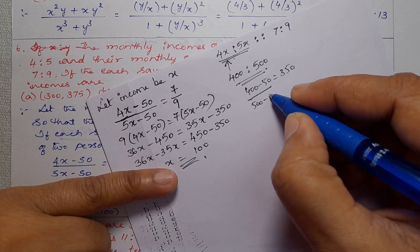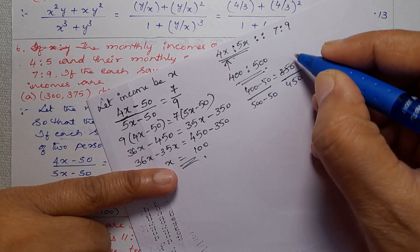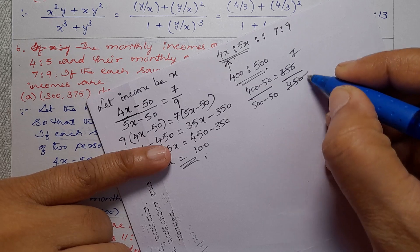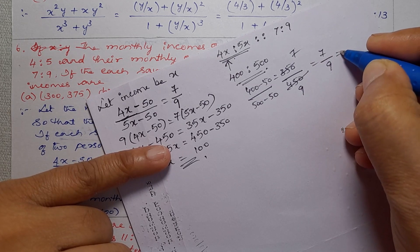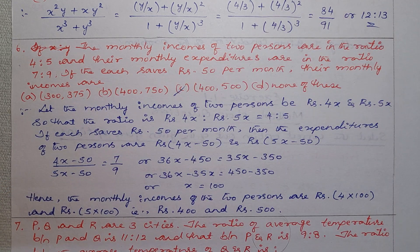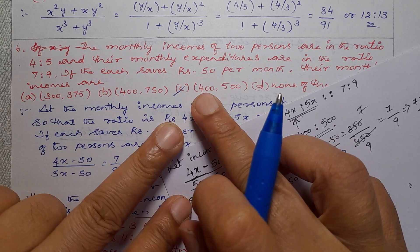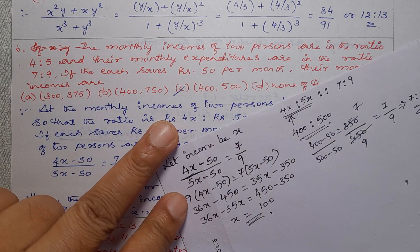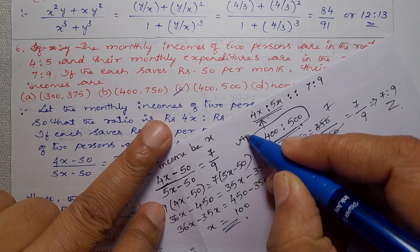500 minus 50, so that is 450. This ratio is 7 is to 9, so this is 7 is to 9, correct. Option C is the correct answer, this is the answer.